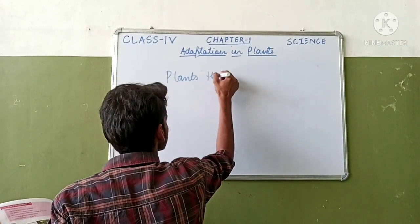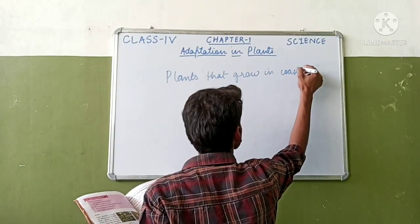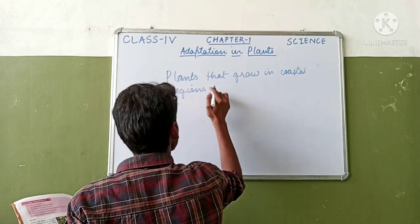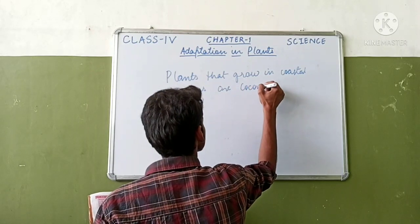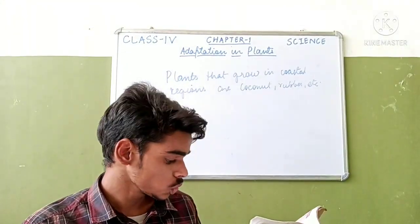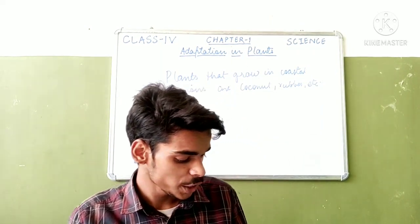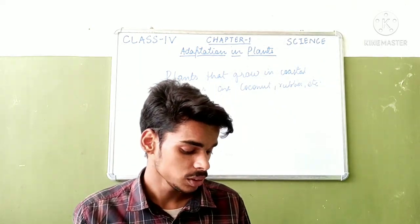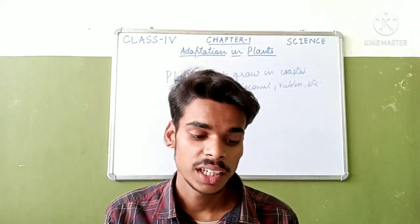Plants that grow in coastal regions are coconut, rubber, etc. Plants that grow in coastal regions have to adapt to strong winds, sandy soils, bright sunlight, very high humidity in the air, and heavy rainfall.